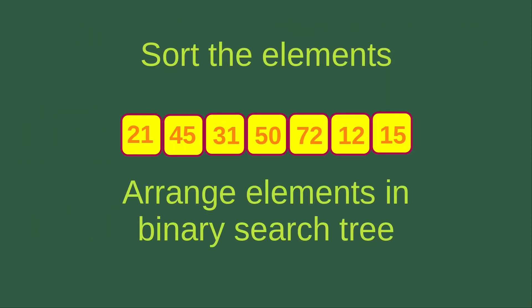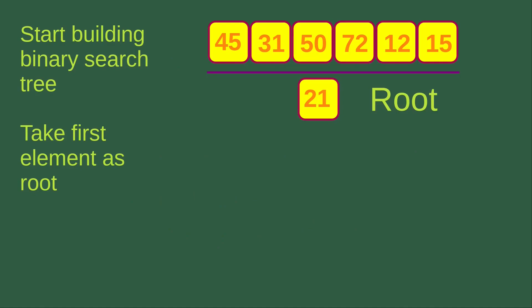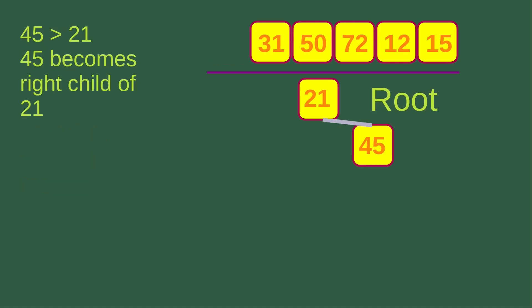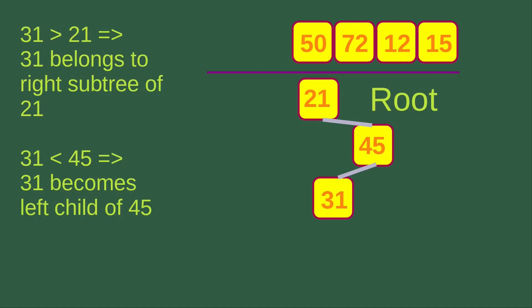After understanding the meaning of a binary search tree, we can do the tree sort process. Suppose we want to sort these elements. The first step is to build the binary search tree starting from the first element, placing 21 at the root. The next number is 45 — since 45 is larger than 21, it becomes the right child of node 21. The next number is 31 — since 31 is larger than 21, it belongs to the right subtree of 21, and since 31 is smaller than 45, it becomes the left child of 45.